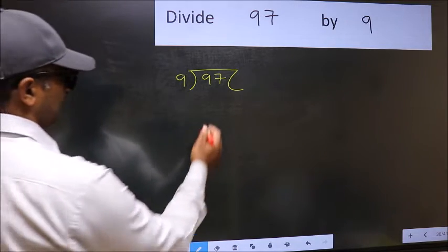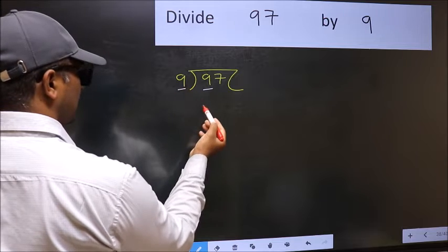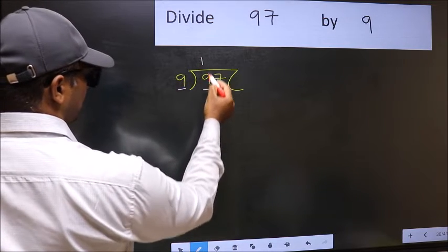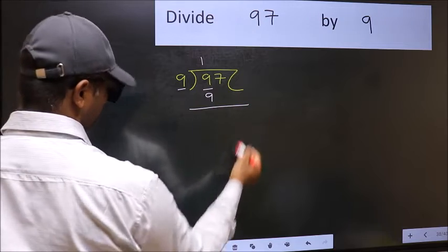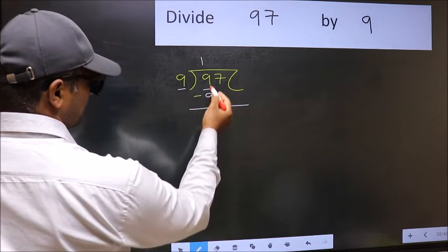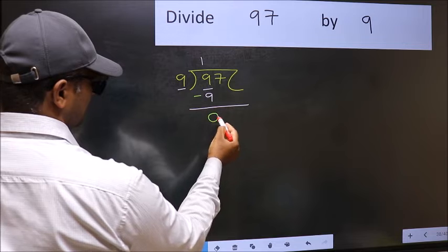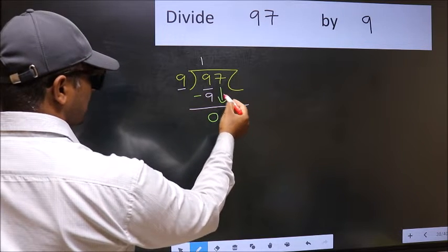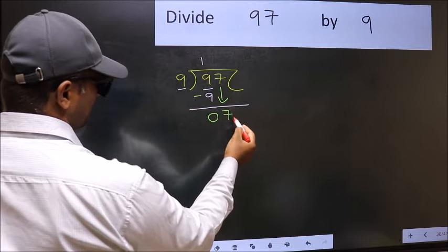Here we have 9 and here also 9. When do we get 9 in the 9 table? 9 once is 9. Now you should subtract: 9 minus 9 is 0. After this, bring down the beside number. So 7 comes down.